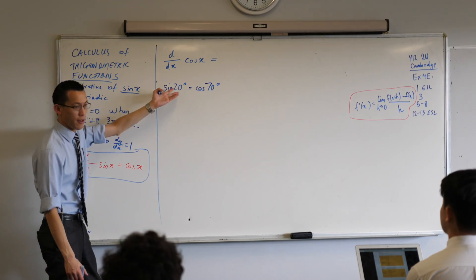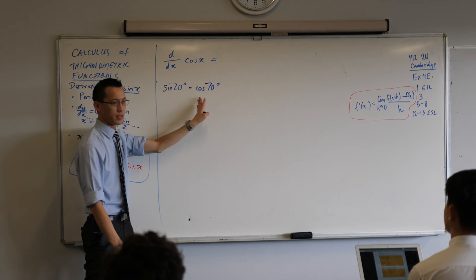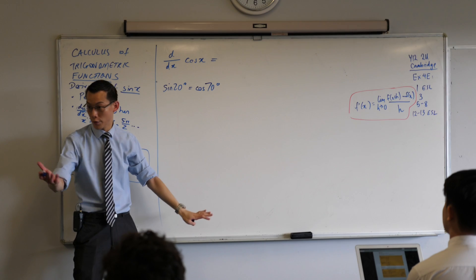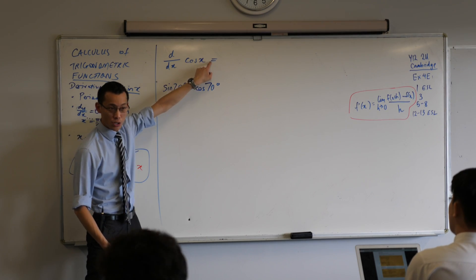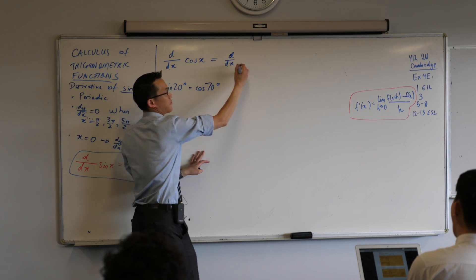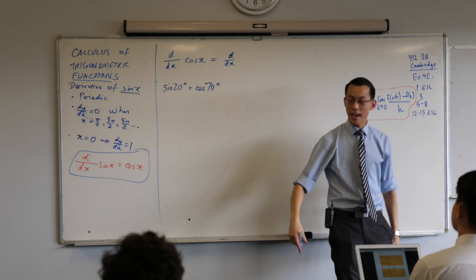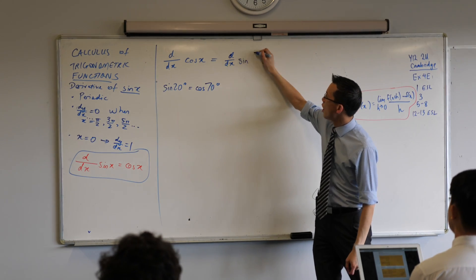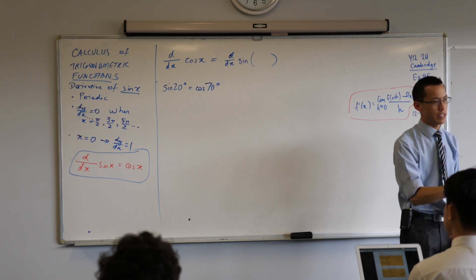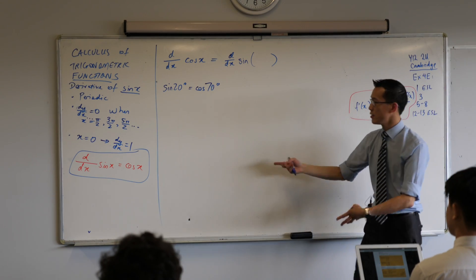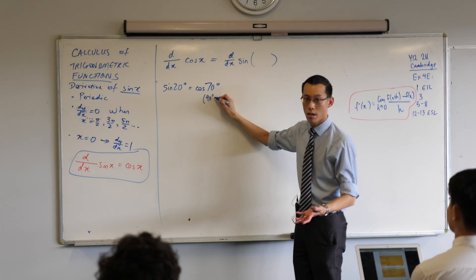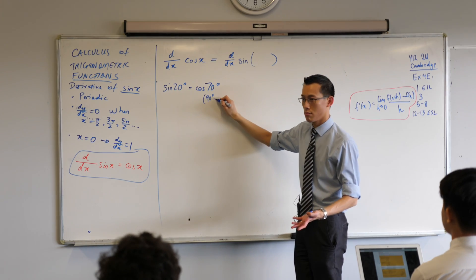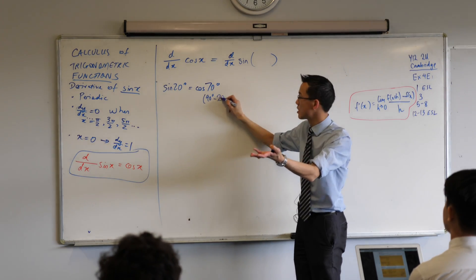Sine of 35 is going to be cos of 55, right? You can do this for anything. Now, we can take this into trigonometry land up here in radians by saying that cos of something is sine of its complement. Now, this is really tricky. In degrees, we would say you got 70 by saying 90 degrees, take away whatever your other angle was. In this case, it was 20.